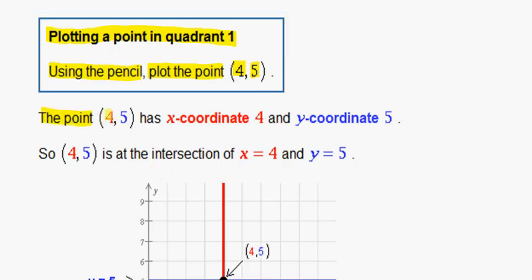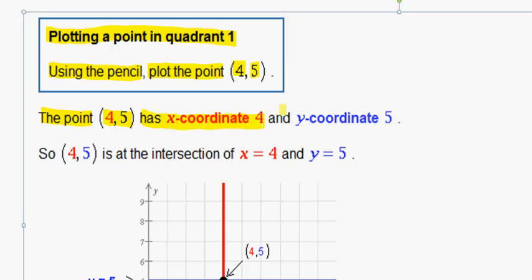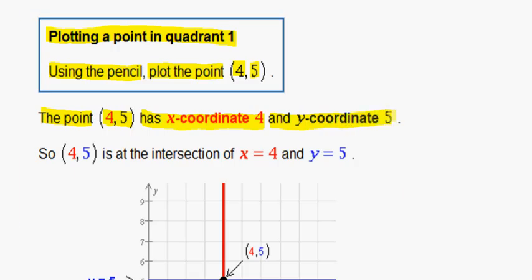The point (4,5) has an x-coordinate of 4 and a y-coordinate of 5.